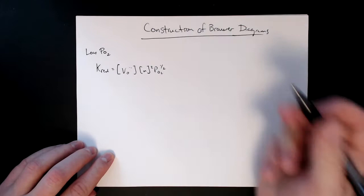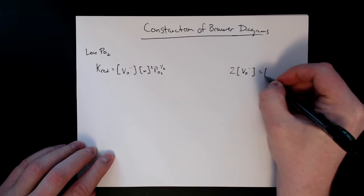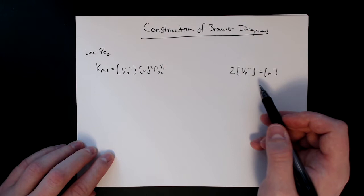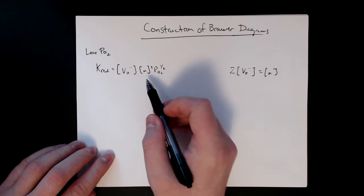This is from what we previously did. We have our Brouwer approximations — the one that applied to this region — where these two species are the highest and everything else is lower. By applying this approximation, we're going to plug this into the mass action expression. Since we already have it solved for the number of electrons, we'll plug that in.